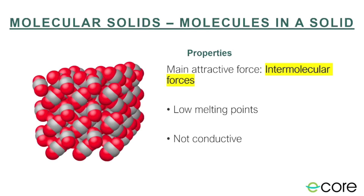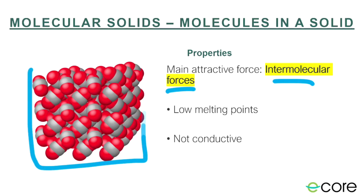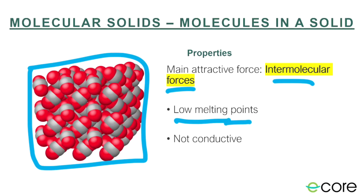A molecular solid is made of molecules, and what holds it together are intermolecular forces. The particular forces depend on the molecules present — for CO2 (nonpolar), it would just be dispersion forces; for water (which we'd call ice), it would be hydrogen bonds. These tend to have low melting points because intermolecular forces are weaker than intramolecular forces. They're also not conductive, because they don't have free electrons.